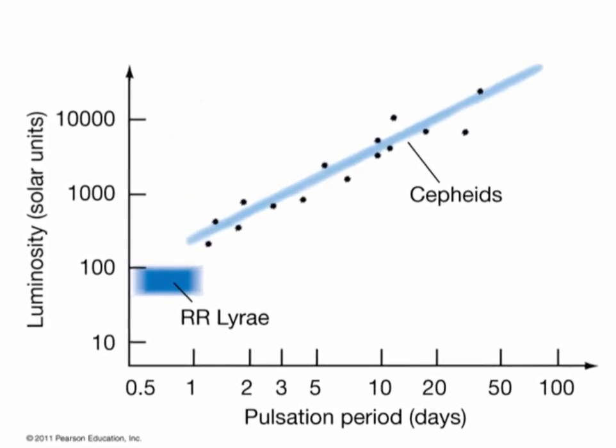Here's a graph of the Leavitt law. It shows that, as we just said, the brighter stars take longer to complete a cycle. It shows that there are two types — the Cepheid and the related RR Lyrae stars — and we've plotted a few example data points on here. What this tells us is that while for a random Cepheid star we may not know its luminosity right away because we don't know its distance, if we can measure how long it takes to complete one cycle — this pulsation period — we can use this Leavitt law graph to figure out how bright the star is. For example, a star that has a pulsation period of five days is approximately 1,000 times more luminous than the Sun.